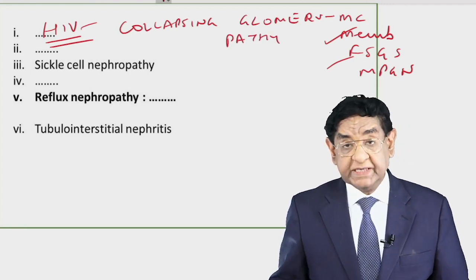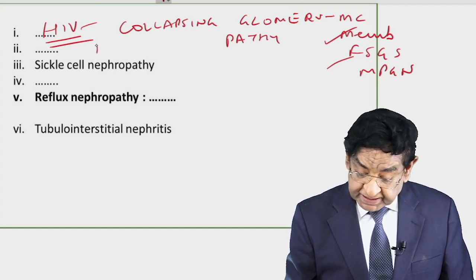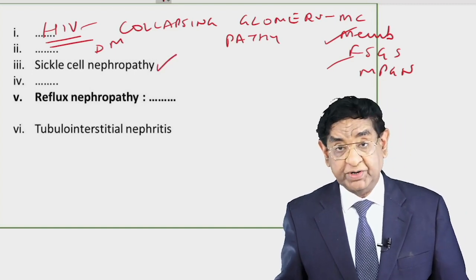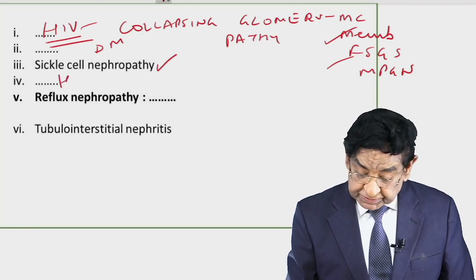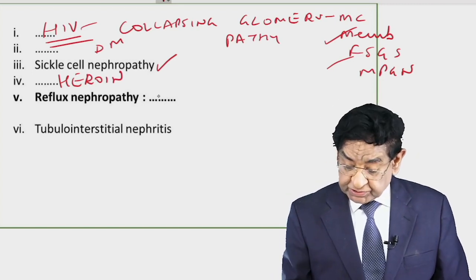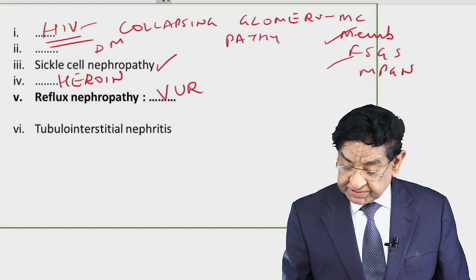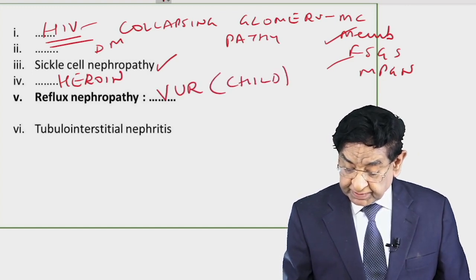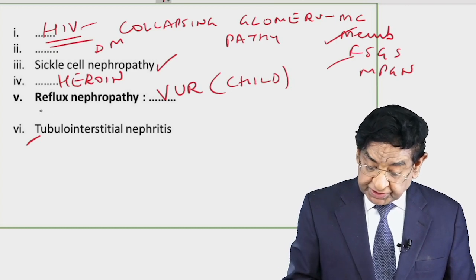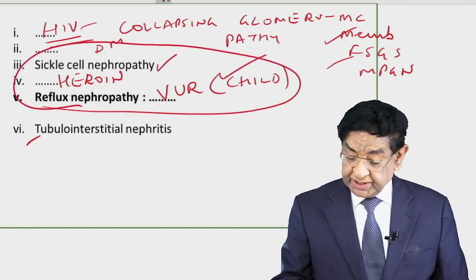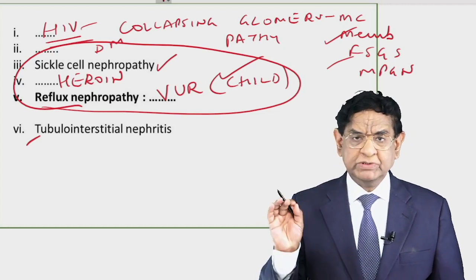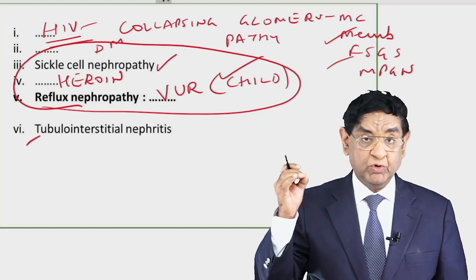Other important secondary causes include diabetes mellitus, sickle cell nephropathy, heroin use, and reflux nephropathy — vesicoureteric reflux seen in children. A golden line to remember: if you encounter a patient with sickle cell disease, heroin addiction, or a child with vesicoureteric reflux, most likely you are dealing with FSGS.